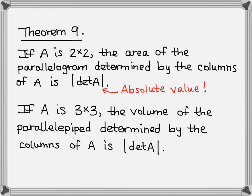Don't forget your absolute value because neither area nor volume can be negative. In order to use this theorem, we have to translate the shape so that one vertex is at the origin, and then the columns of A are going to be the adjacent vertices — vertices that share a side with the origin.